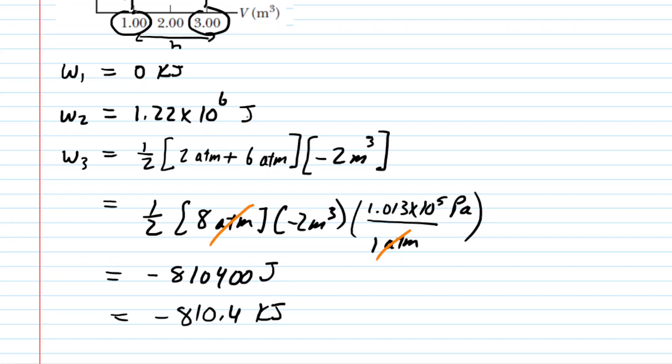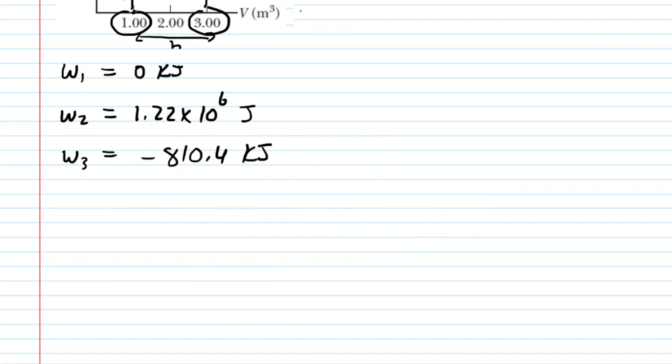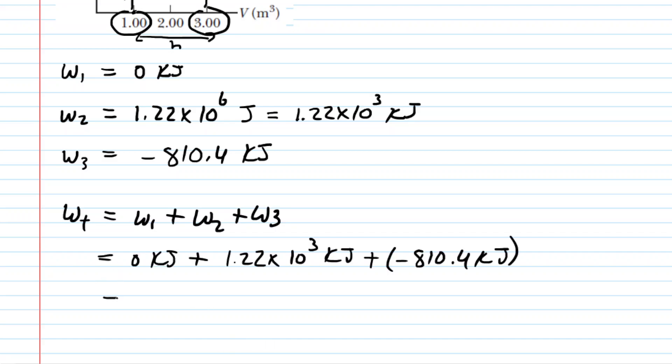So let's take a look at the work done by all three processes now. So here are those works. It might be good for us to convert work 2 into kilojoules as well. So just divide that by 1,000 and you'll get 1.22 times 10 to the power of 3 kilojoules. And now for the total work, it's very easy. The total work is simply work 1 plus work 2 plus work 3. So let's plug those in.